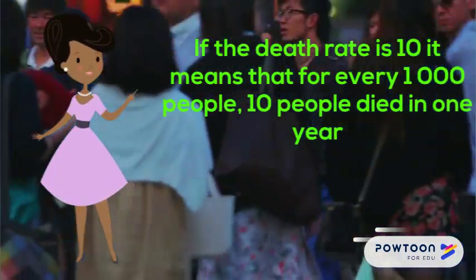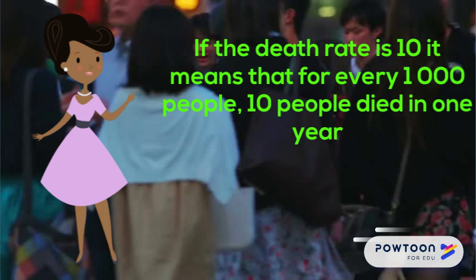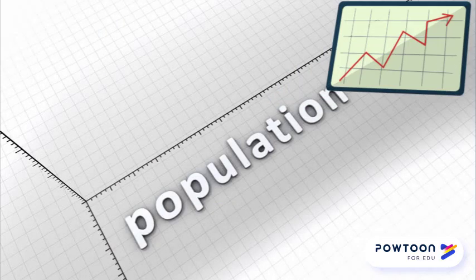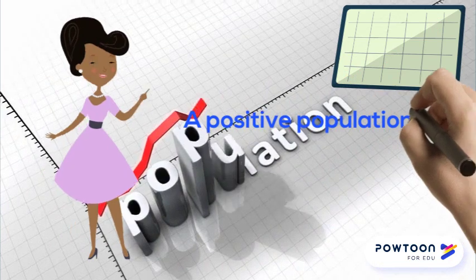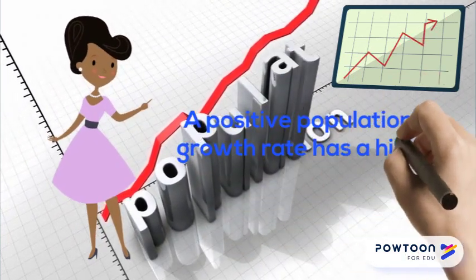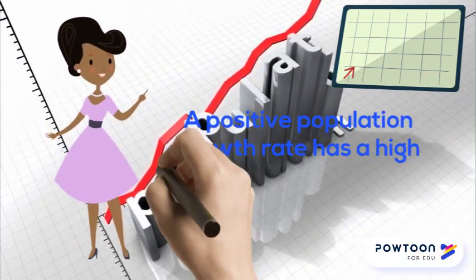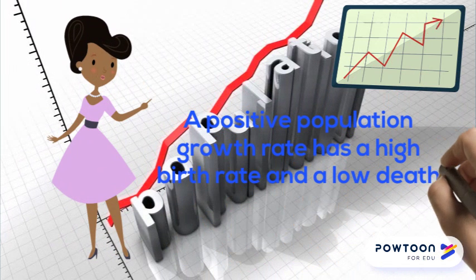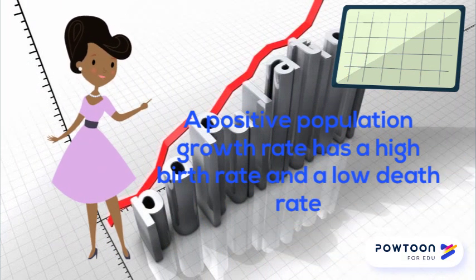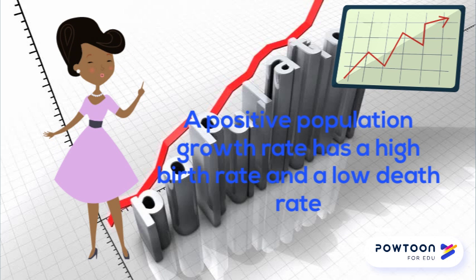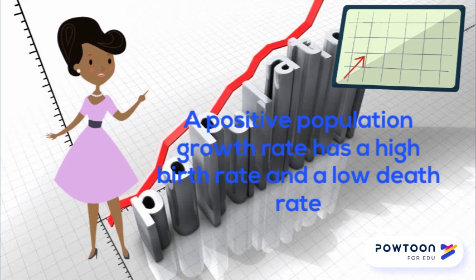The population growth rate is the difference between the birth rate and the death rate in a country. A positive population growth rate has a high birth rate and a low death rate. An even population growth rate has an equal number of births and deaths. A negative population growth rate has a low birth rate and a high death rate.